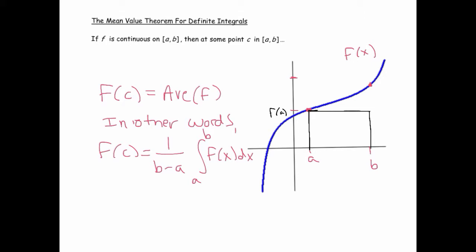If I make this other rectangle, which I'm determining by using the maximum value (which in this case happens at b), well that area is too much. But the average value happens somewhere in between.